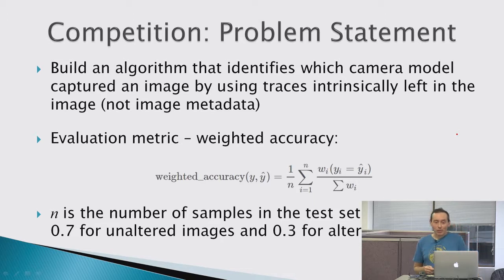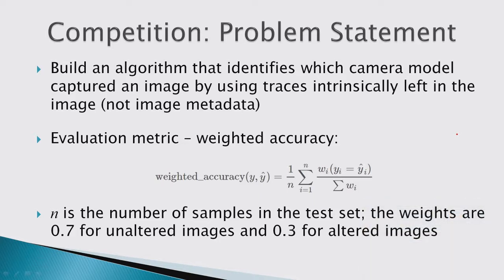This is the official problem statement for the competition: to build an algorithm that identifies which camera model captured an image by using traces intrinsically left in the image and not image metadata. In the test set there was definitely no metadata, and the evaluation metric was weighted accuracy.